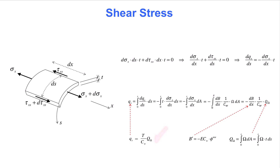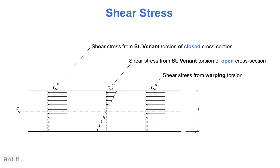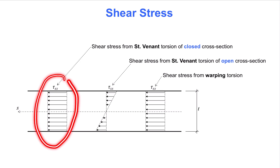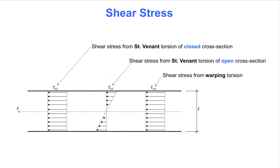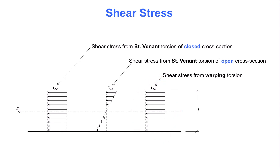The determination of shear stress from warping torsion in closed cross sections is a statically indeterminate problem, similar to what is encountered for closed cross sections subjected to shear force, and is not addressed in this video. To summarize the shear stress calculations in torsion theory, the next slide shows the distribution of stress across the wall of thin-walled cross sections including both St. Venant torsion and warping torsion. St. Venant theory applied to closed cross sections gives a uniform shear stress distribution over the thickness, while applied to open cross sections it gives a linearly varying stress across the thickness. The portion of torque carried by warping torsion results in a uniform shear stress distribution over the thickness, regardless of whether the cross section is open or closed.